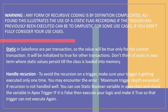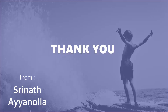To handle recursion in a trigger, make sure your trigger is getting executed only one time. You may encounter the error 'maximum trigger depth exceeded,' among other errors. If the recursion is not handled well, you can use a static boolean variable in an Apex class and check the variable in the Apex trigger. If it's false, then execute your logic and make it true so that the trigger cannot be executed again.